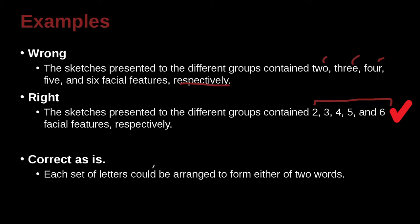Each set of letters could be arranged to form either of two words. This is less than 10, so that's pretty obvious. It looks a little complicated because we have 'either,' but that's not another number — we're not comparing numbers or having a series of numbers. So we just spell it out: TWO.